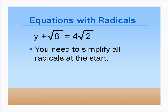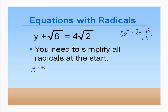Here we have y + √8 = 4√2. These aren't like radicals right now, so we want to simplify. Any time we have a radical, we want to simplify as much as we can. For √8, 4 is a perfect square that goes into 8, so we split it into √4 · √2, which gives 2√2. So we can rewrite the equation as y + 2√2 = 4√2.